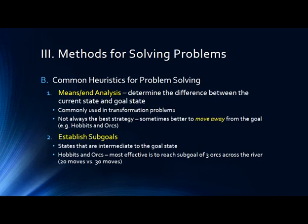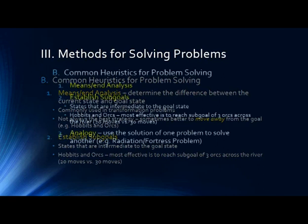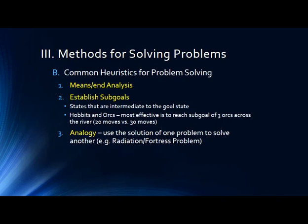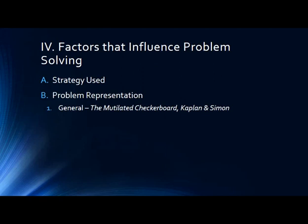Establishing subgoals is important, particularly with complex problems. Long-distance runners set subgoals like 'I'm going to make it to the end of the Key Bridge.' You might set a subgoal of bench pressing your current weight before working toward twice your weight. Another common heuristic is solution by analogy — we just did that with the radiation and fortress problem: you take the solution from another problem and apply it to the current one.